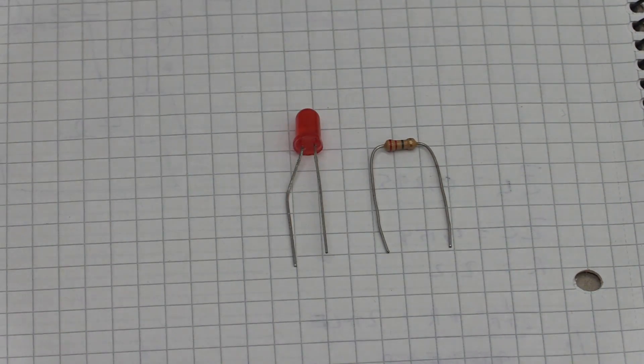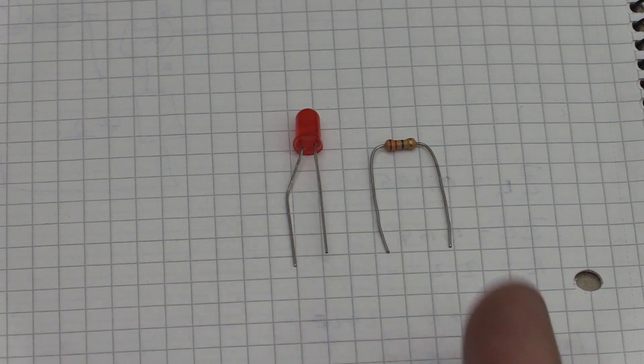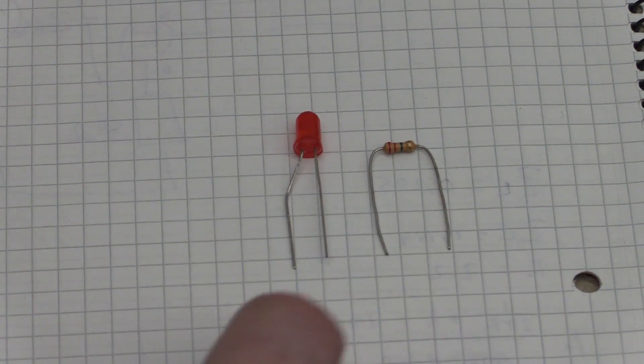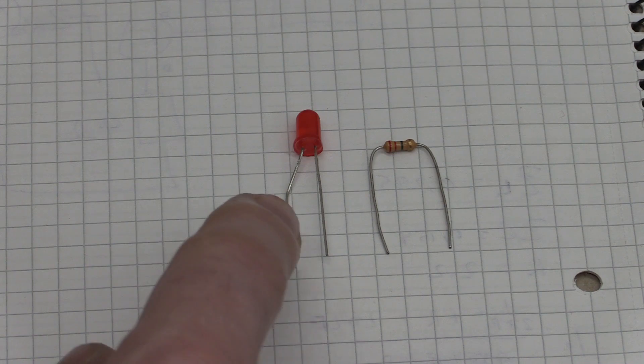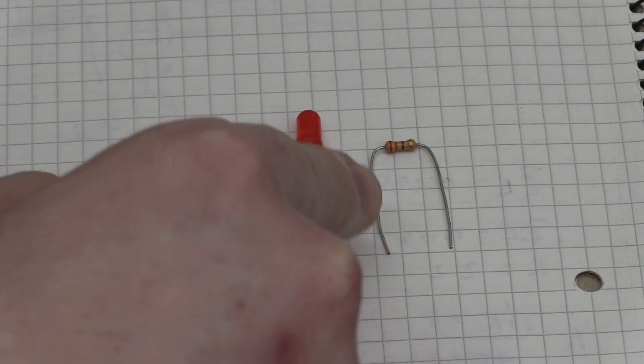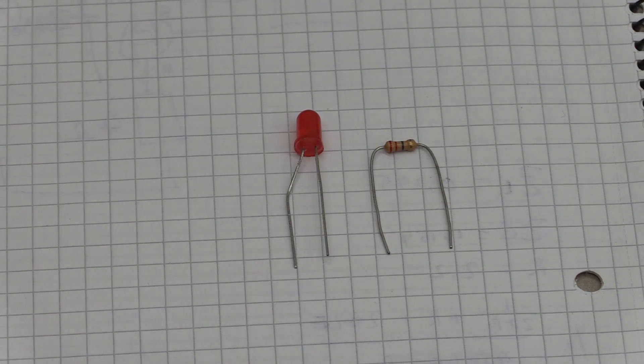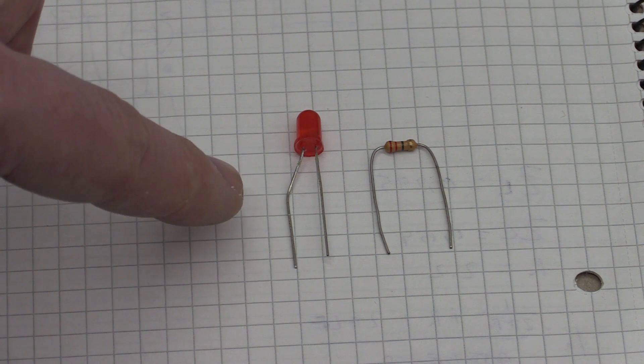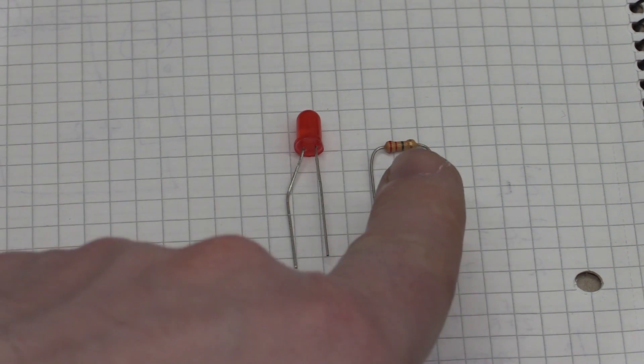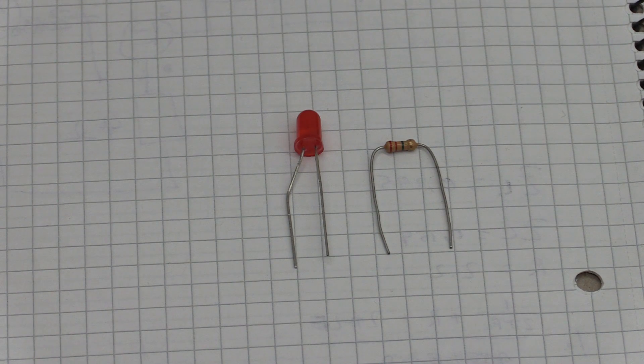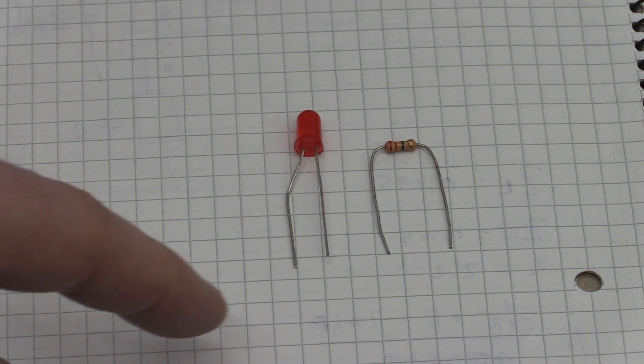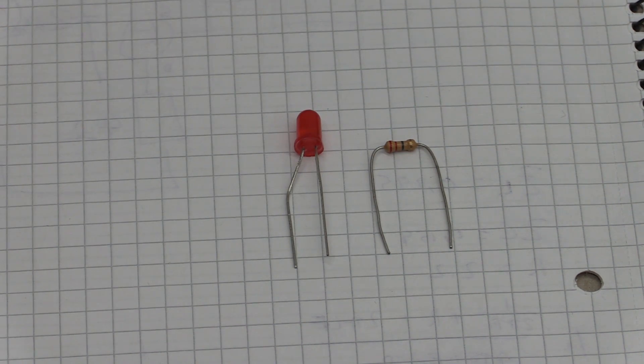This is a 1 kilo ohm resistor and it makes sure to limit the current. If we apply 5 volts across here, we have a drop, the forward voltage drop of the LED is around 1.7 volts. So we have 3.3 volts left across this 1 kilo ohm resistor that gives us 3.3 milliamps, which this LED would be more than happy with.